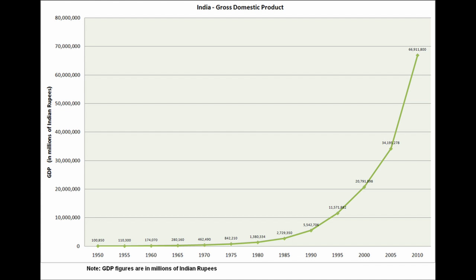Following public discontent with the state of emergency she declared in 1975, the Congress was voted out of power in 1977. The then-new Janata Party, which had opposed the emergency, was voted in. Its government lasted just over two years. Voted back into power in 1980, the Congress saw a change in leadership in 1984, when Indira Gandhi was assassinated. She was succeeded by her son Rajiv Gandhi, who won an easy victory in the general elections later that year. The Congress was voted out again in 1989, when a National Front coalition, led by the newly formed Janata Dal in alliance with the Left Front, won the elections. That government too proved relatively short-lived, lasting just under two years.